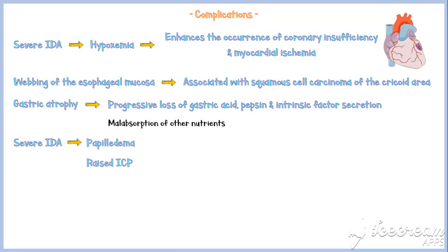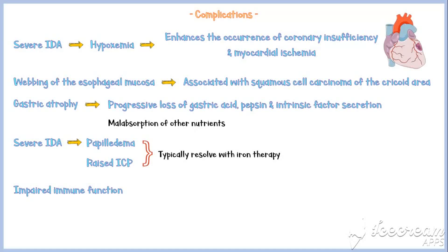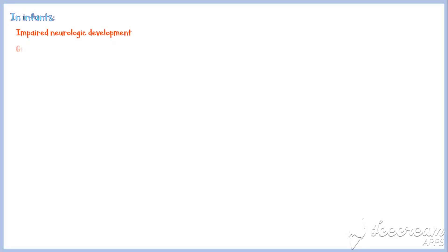However, these complications are typically resolved with iron therapy. Impaired immune function is also reported with iron deficiency anemia, and this will increase the risk of infection. In infants, iron deficiency anemia causes impaired neurologic development and growth retardation. In children, it causes reduced scholastic performance.